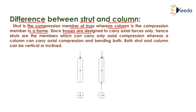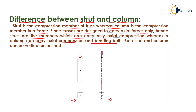Since trusses are designed to carry axial forces only, struts can carry only axial compression, whereas a column can carry axial compression and bending both. In the figure shown, the first one is the strut and the second one is the column. In case of a strut, because of the axial forces in the truss, the strut will undergo only axial compression. That is why a strut is a member which can carry only axial compression. But in case of frames, the column is subjected to a compression force acting at some eccentricity.